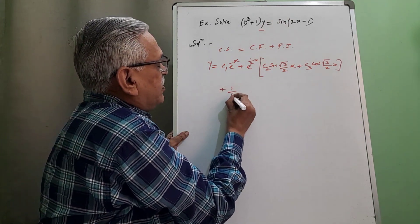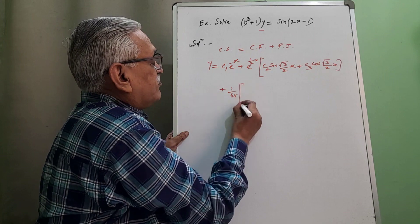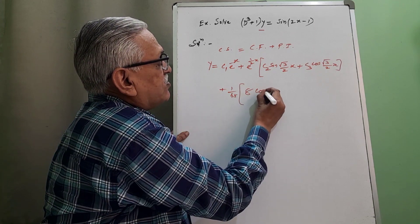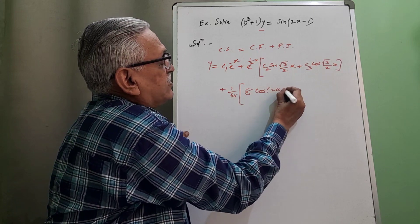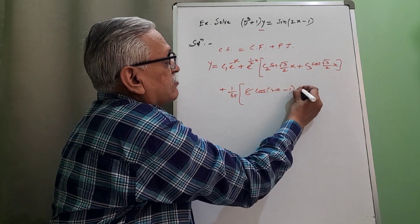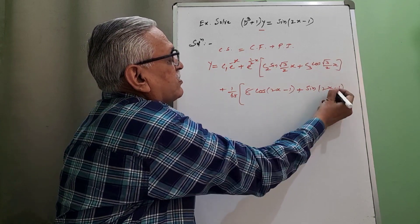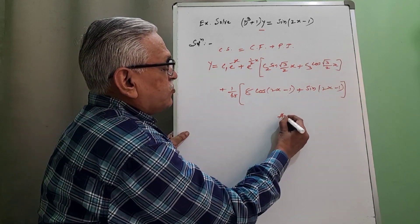1 by 65, 8 times cos of 2x minus 1 plus sin of 2x minus 1 as a required solution or required answer.